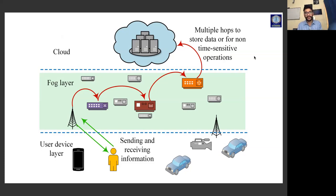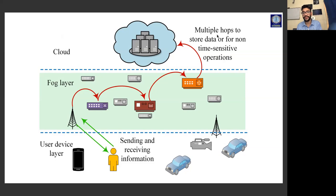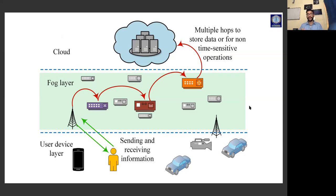The fog computing layer devices have less configuration compared to the cloud, and so their storage capacity is very low. To store data, we again rely on the cloud using multiple hops — but only for non-time-sensitive operations. If there is time-sensitive data, you first perform operations at the fog layer itself and then send it off to the cloud for storage, because there is always a need for historical or predictive analysis.